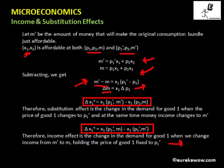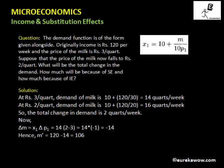Let us take an example to illustrate this. Suppose we have a demand function of the form X1 equals 10 plus M divided by (10 times P1). Originally the income is Rs. 120, so M equals 120. The price of milk is Rs. 3, so P1 equals 3. Suppose the price of milk falls to Rs. 2, so P1 dash equals 2.